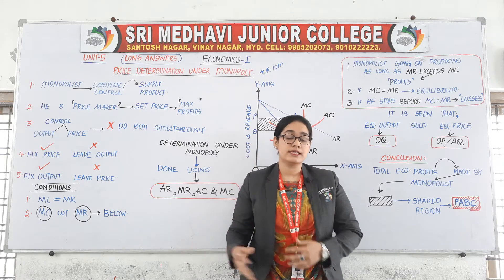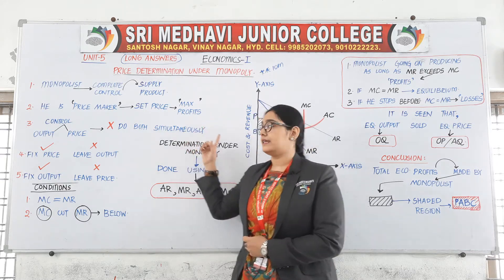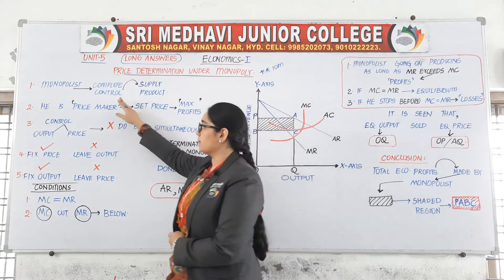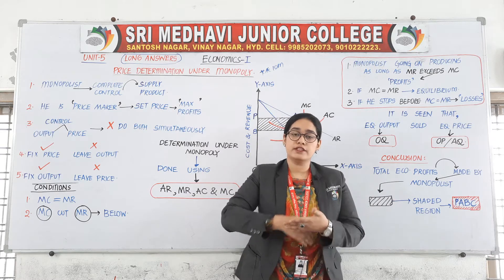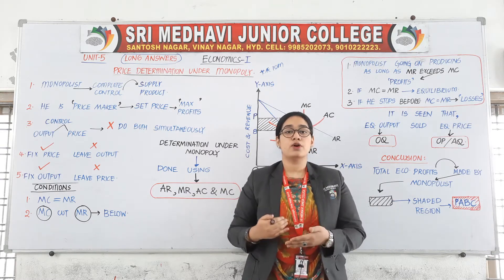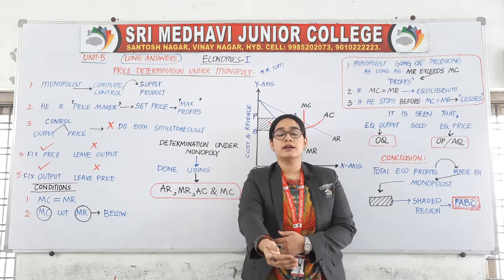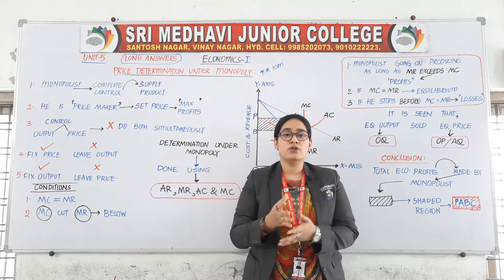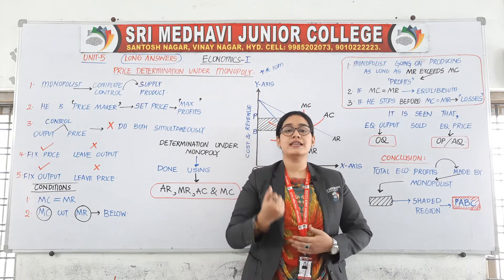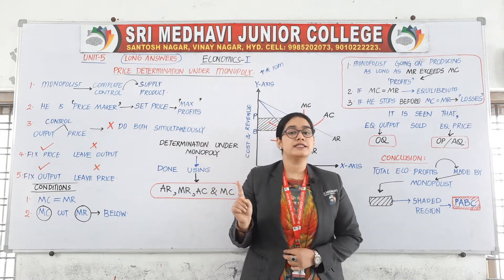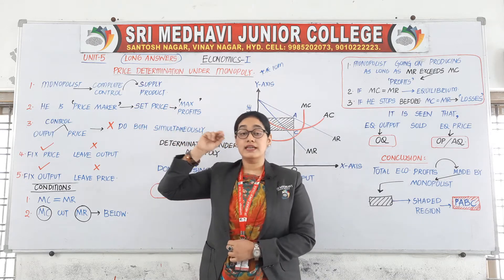So how is he going to decide the price — how will price determination take place under monopoly? A monopolist will have complete control on the supply of the product. That means how much quantity to supply, how much to hold back, what is the maximum limit to keep, how much to bring into the market and at which date — all these aspects of supply will be in the control of the monopolist. No other person will control the supply.